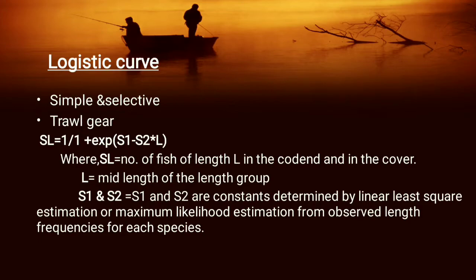Let's talk about the logistic curves. They are simple and selective. Trawl gear is a selected gear and the equation for the logistic curve is: SL equals 1 divided by 1 plus exponent of S1 minus S2 multiplied by L. Here SL is the number of fish of length L in the codend, L is the mid-length of the length group, and S1, S2 are constants determined by linear least square estimation or maximum likelihood estimation from observed length frequency for each species.